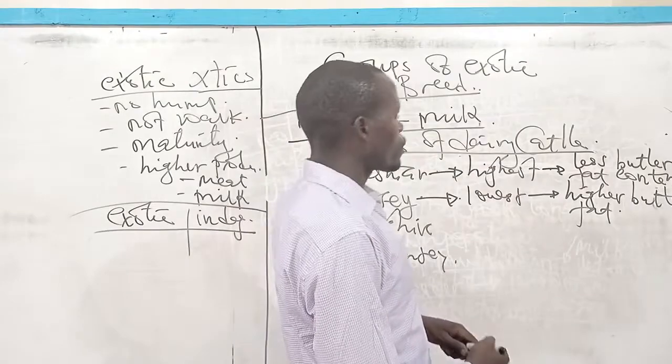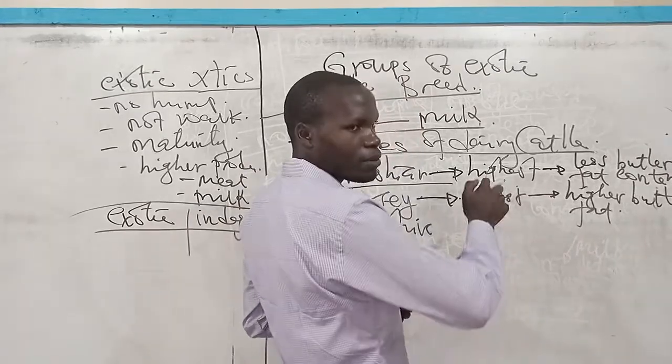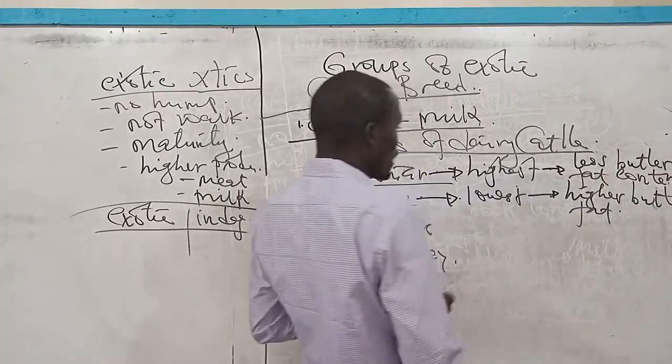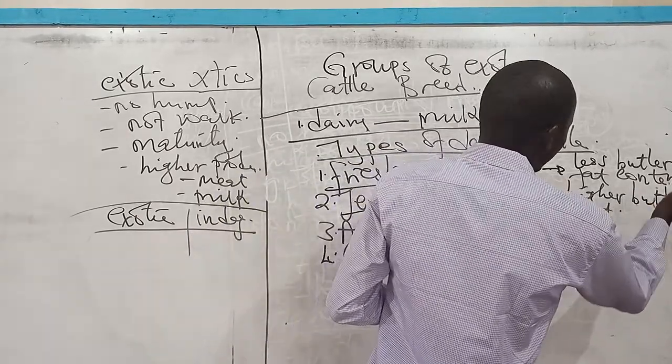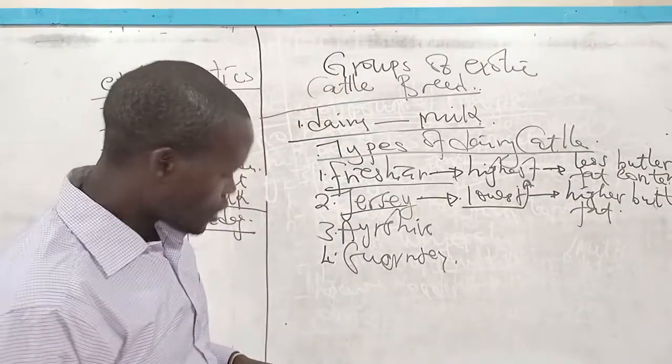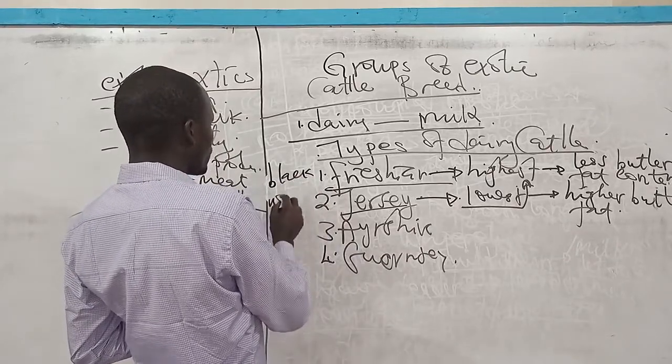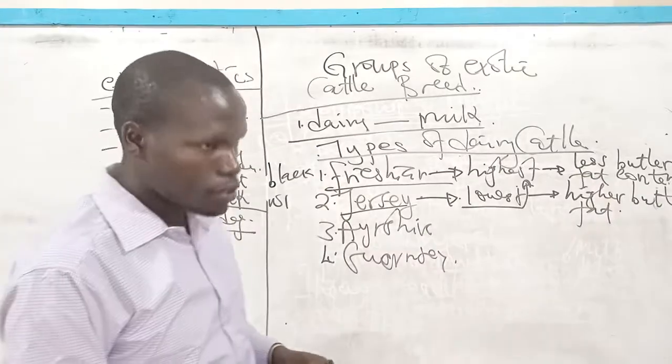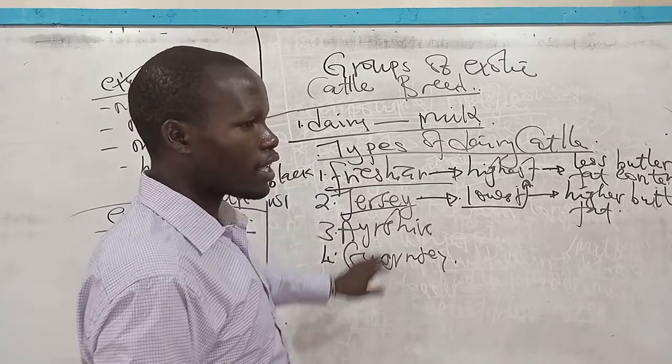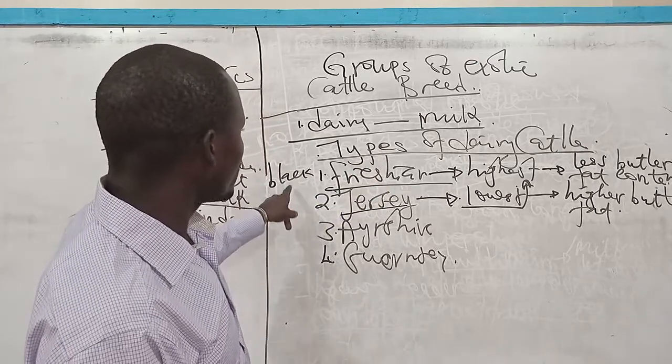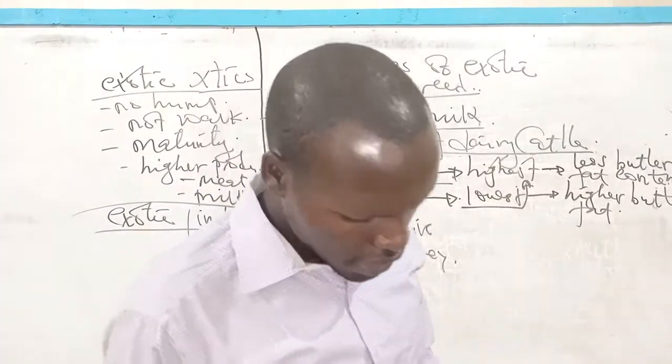Its milk has a higher butter fat content. Again, once you look at the Friesian, it has black and white patches on its body. So with respect to the phenotype appearance, you can refer to the shade Friesian from the other dairy types of cattle in that the Friesian has the black and the white patches on its body.